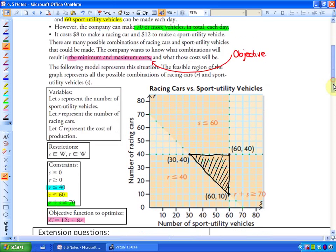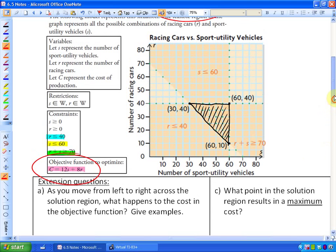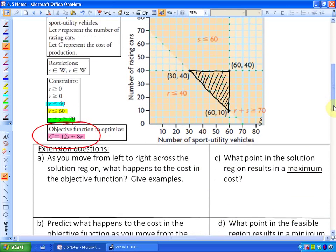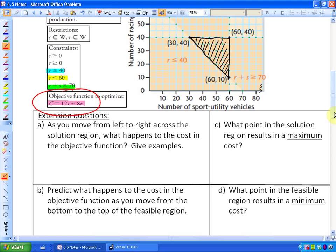So if you look at their objective function, that's right here. It's that the cost is 12 times the number of SUVs because it's $12 per SUV plus $8 per every race car. So that's their objective function. The following model represents this situation. So we've represented the situation. If you'd like to read this, these are the constraints listed here and this is the objective function. What we're actually going to do is investigate the objective function related to the solution region. So what are some patterns that we notice?